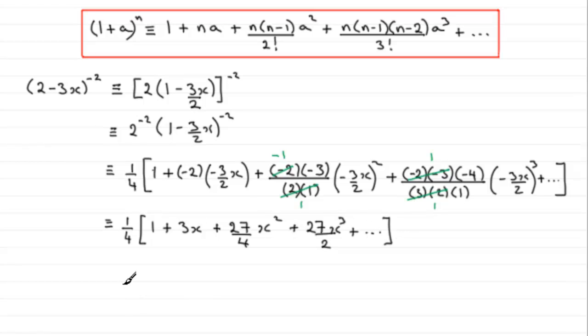Expand the bracket out by multiplying now with that quarter, and you've got a quarter times 1 is a quarter. 3x times a quarter is 3 quarters x. And then for the next term, the x squared term, you're going to get 27x squared over 16. And then we've got plus a quarter times 27x cubed over 2 gives me 27x cubed over 8. And plus and so on, even though we've got to go up to the term in x cubed.